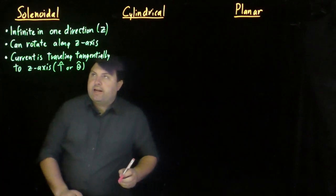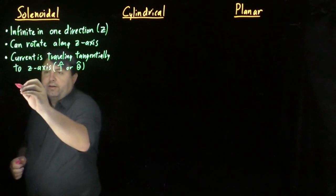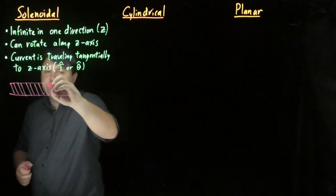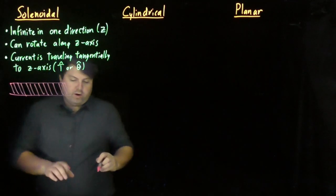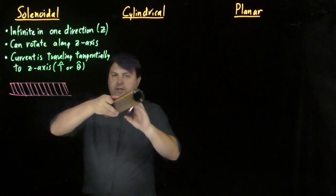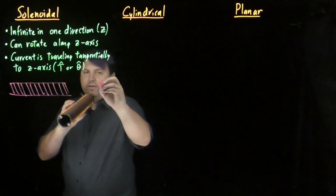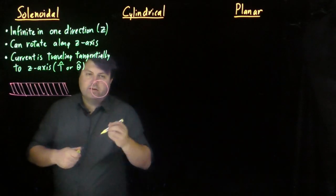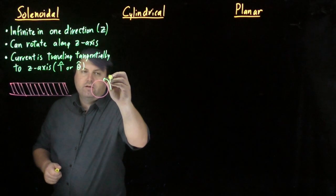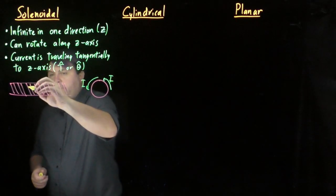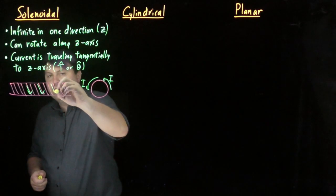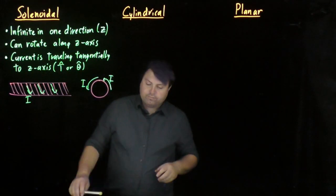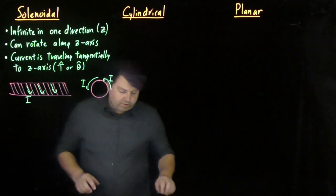So looking at a solenoid mathematically, we could then draw it a little bit as a solenoid. From one perspective, looks like this. From our other perspective, looks like a circle. And then we would have our current traveling in this way, and our current traveling in this way.